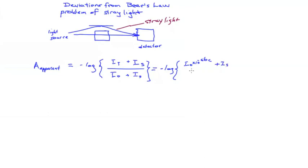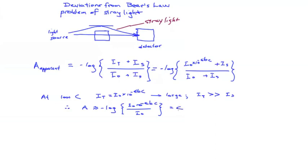It may be that the stray intensity is small compared to the incident intensity. And even at low concentrations, it might be small compared to the transmitted intensity. And the calculated absorbance would be essentially proportional to concentration. But at high concentrations, 10 to the minus epsilon BC gets smaller and smaller, and I sub s will not be negligible. Once again, we have a negative deviation in Beer's Law.